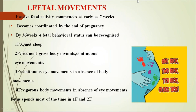Fetal movements usually begin as passive movements by seven weeks, which cannot be perceived by the mother, and become more coordinated by the end of pregnancy. By 36 weeks of gestation, there are four behavioral patterns: quiet sleep; frequent gross movements with continuous eye movements; continuous eye movements without gross body movements; and vigorous body movements without eye movements.